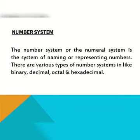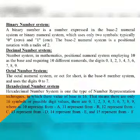A number system, or numeral system, is the system of naming or representing numbers. There are various types of number systems. The first one is the binary number system, which has a base of 2 and understands only 0 and 1.